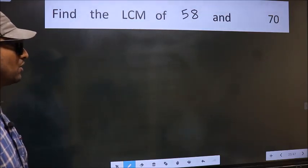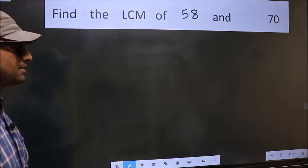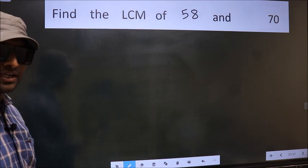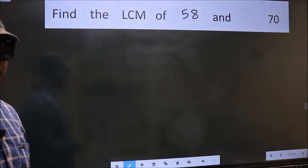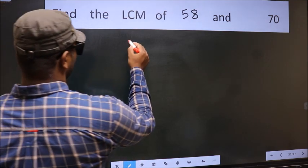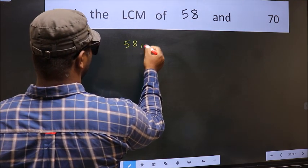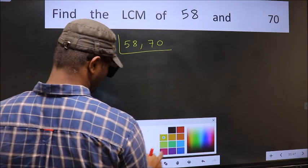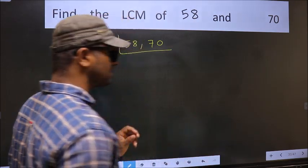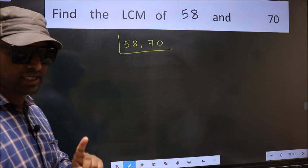Find the LCM of 58 and 70. To find the LCM, first we should frame it in this way: 58, 70. This is your step 1.